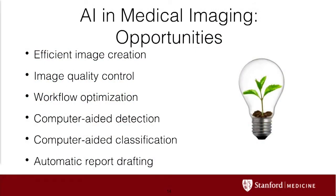Some of the opportunities we see here: first, efficient image creation. Second, image quality control — today our technologists do quality control as peer review on a small fraction of cases. Wouldn't it be nice if we had a model that could automatically rate every case and provide feedback to the technologist, assuring the image contains the right anatomic elements? Third, workflow optimization — as a chest radiologist, every morning I come to work and there are 70 ICU chest X-rays ready for reading, obtained primarily to detect emergency events like tubes out of place or tension pneumothorax. Wouldn't it be great if an algorithm could flag those and pull them to the top of my list so I read those first?